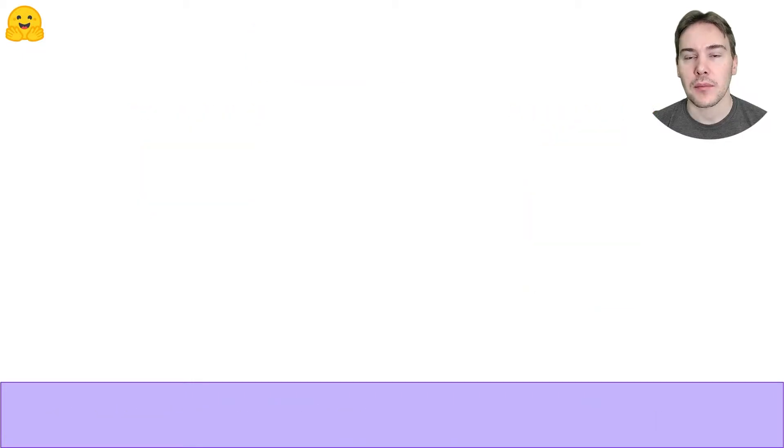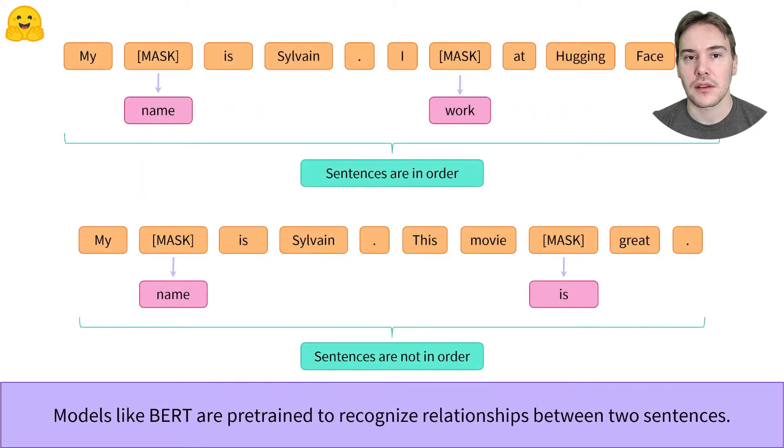That's why models like BERT are often pretrained with a dual objective. On top of the language modeling objective, they often have an objective related to sentence pairs.